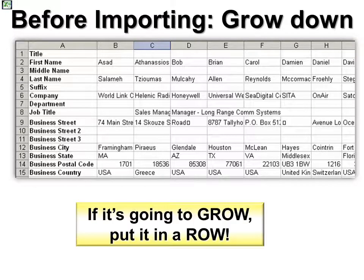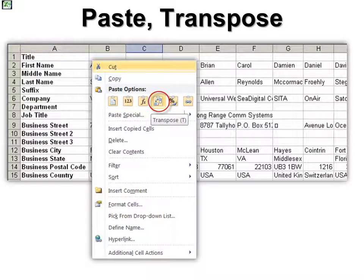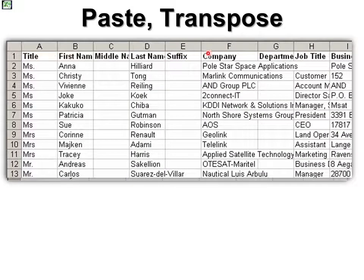Before we import, we want to make sure we orient the data correctly, because some people actually build their Excel spreadsheets so that their headers are in the left column. But whenever we're going to build a real database that will grow, put it in a row. So you would right-click on it, copy it, then right-click again and choose the Paste option of Transpose. When we do that, everything in the left column now goes into the top row, just the way it would in Access. That's a quick fix in Excel before bringing it into Access.